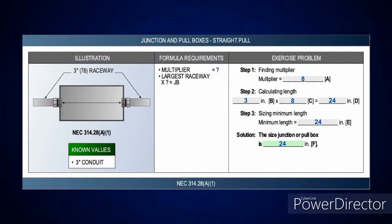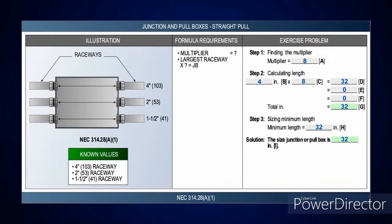This is where you do your straight and angle pulls. This is probably the most simple calculation in the code. If you go over and look at NEC 314.28 A1 and A2 — A1 deals with straight pulls. You should know this off the top of your head: the multiplier for a straight pull is 8, and for an angle or U-pull the multiplier is 6. For a straight pull with a single 3-inch raceway, take 3 inches times 8 — the minimum length across that box has to be at least 24 inches.